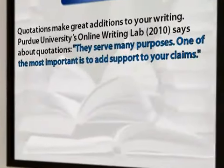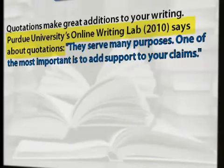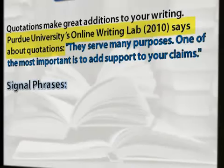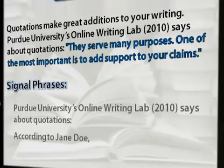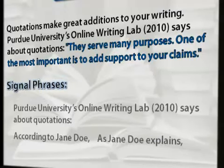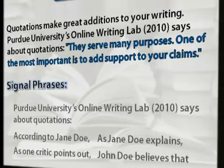Those three techniques are: number one, introduce your quotation. In other words, a quotation should not seem like it simply dropped out of the sky and landed in your paragraph. You want to integrate that quotation into your own paragraph by using a signal phrase or speaker tag. Our signal phrase in this case is 'Purdue University's online writing lab says about quotation.' Other signal phrases that are common are: 'according to Jane Doe,' 'as Jane Doe explains,' 'as one critic points out,' 'John Doe believes that,' et cetera.